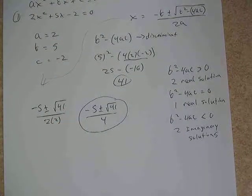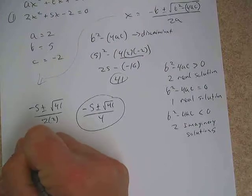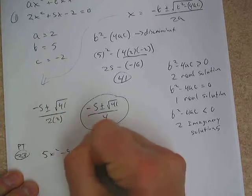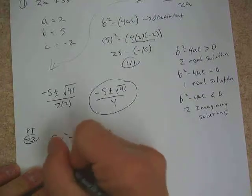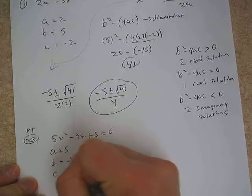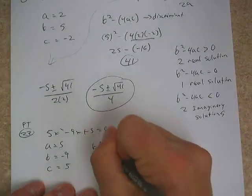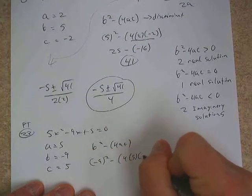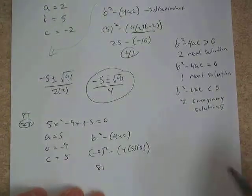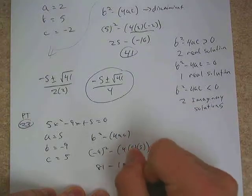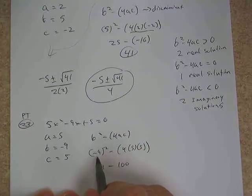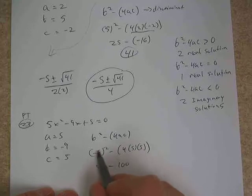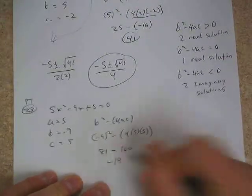Let's look at number 23 on the practice test: 5x squared minus 9x plus 5 equals 0. We list a = 5, b = negative 9, c = 5, and calculate the discriminant: negative 9 squared minus 4 times 5 times 5. Be careful — when you put negative 9 in here, we're squaring a negative, so we get a positive: 81. And over here we get 100, giving us a discriminant of negative 19.